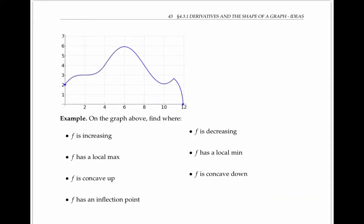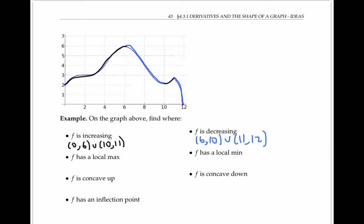Please pause the video and find all of these features for the graph of f shown here, expressing your answers as x values. If we assume the function is slightly increasing near x equals two, then f is increasing for x values between zero and six, and again for x values between 10 and 11. F is decreasing when x values are between six and 10, and again for x values between 11 and 12. F has a local maximum at x equals six and again at x equals 11.